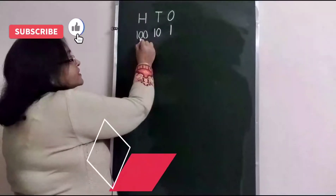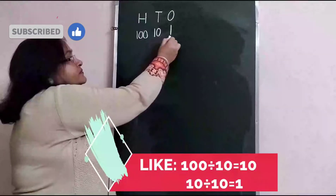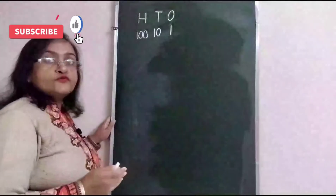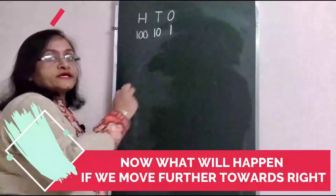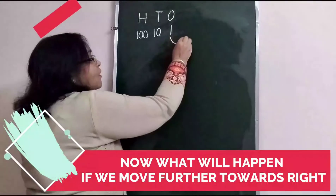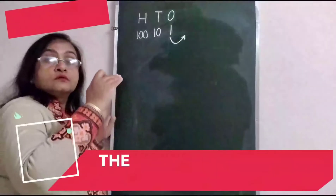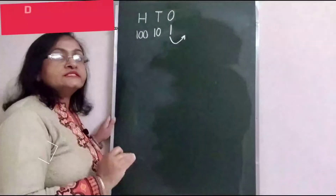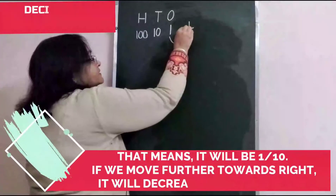Like, hundred divided by ten is ten, and ten divided by ten is one. Now, if we move further towards the right, the value of the digit will be reduced ten times, meaning it will become one by ten, then one by hundred.